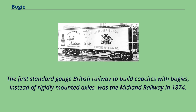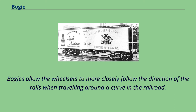The first standard-gauge British railway to build coaches with bogeys, instead of rigidly mounted axles, was the Midland Railway in 1874. Bogeys allow the wheel sets to more closely follow the direction of the rails when traveling around a curve in the railroad.